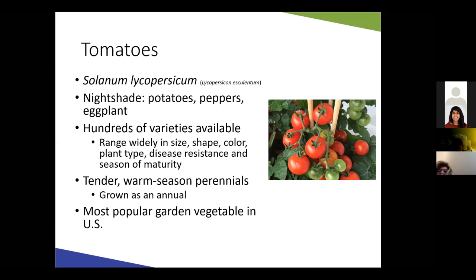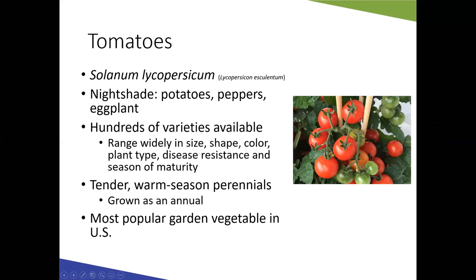Tomatoes are a tender, warm-season perennial, but they don't tolerate cold temperatures, so here in the United States we typically grow them as annuals. In greenhouses and warmer climates, you can see plants living a year, 18 months, or even two years if well cared for. These are the most popular garden vegetable in the United States — about 90 to 95% of American gardeners with vegetable gardens grow tomatoes.